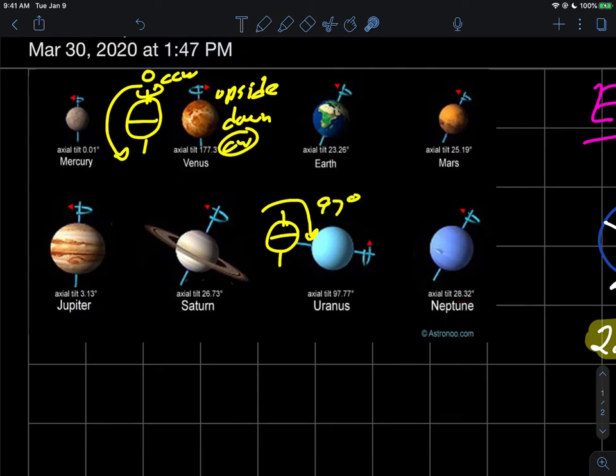Then Neptune is at 28 degrees. So my point is that tilt is really not that unusual. There are a couple planets that aren't tilted very much, but many are.